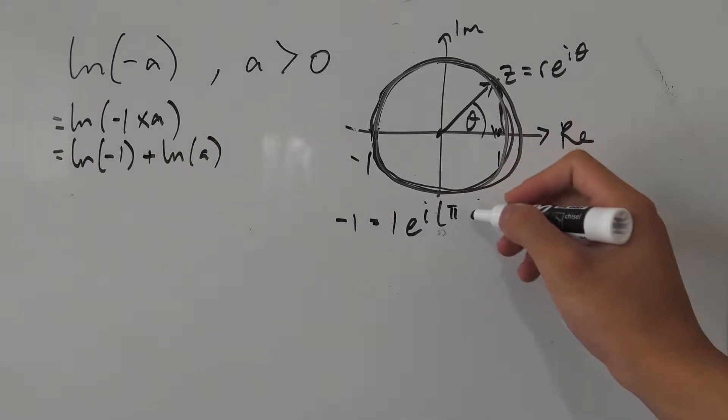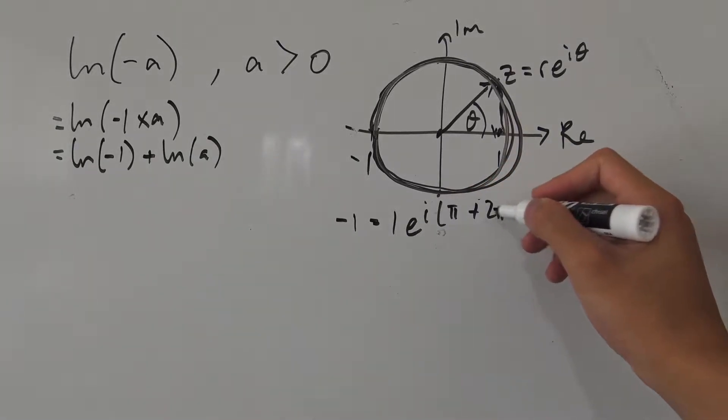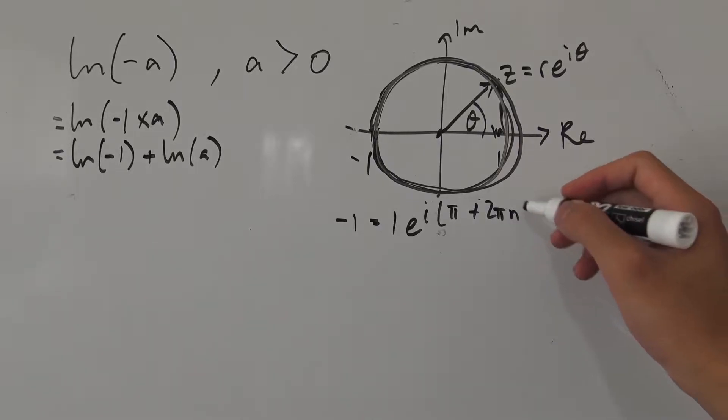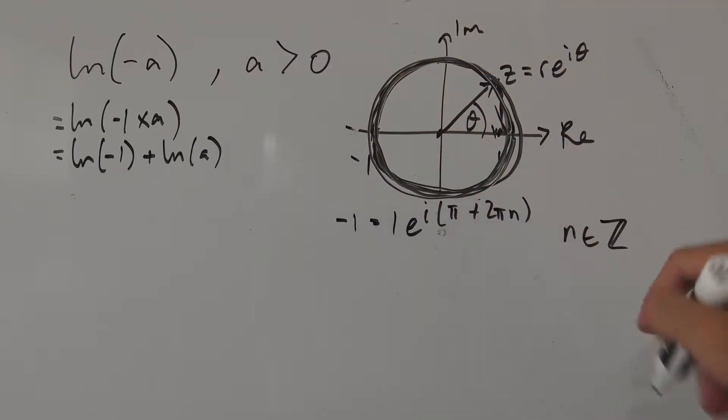The angle is not just pi. Our angle is pi plus 2 pi n, where n is some integer. And if you want to go around and keep landing on the same spot, our n has to be an integer. So it can't be like three quarters or something, otherwise you'll land on some random spot in the circle.